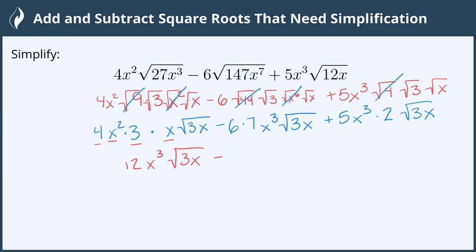The next one we have 6 times 7 which is 42. So we have 42x³ and again 3 and x must remain inside the radical because they don't simplify. The last one we have 5 times 2 which is 10x³ and again 3 and x remain in the radical.